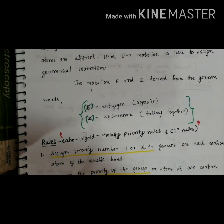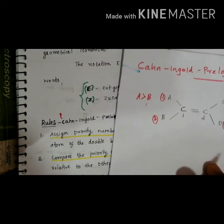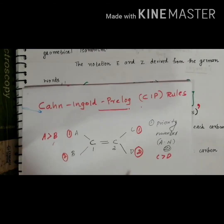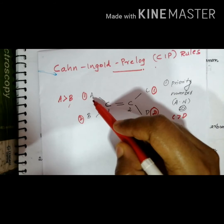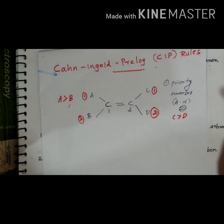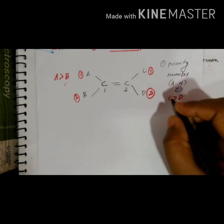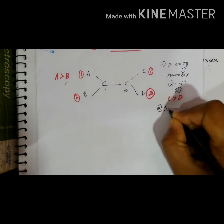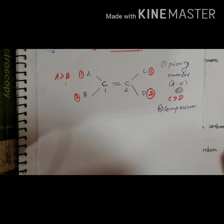Rule number two: compare the priority of the groups or atoms on one carbon relative to the other. That means here the priority is 1, 2 on one carbon and 1, 2 on the other carbon — this step involves comparison of the priority numbers on each carbon of the double bond.